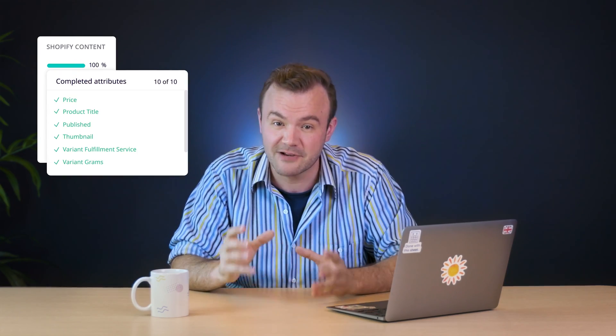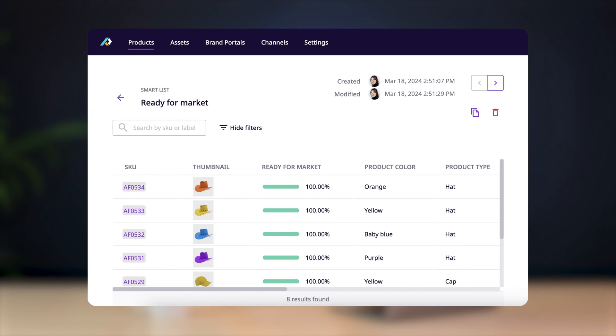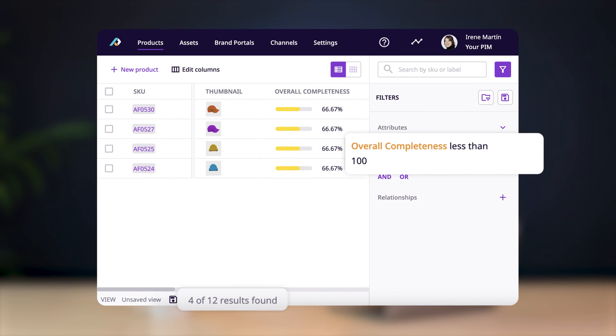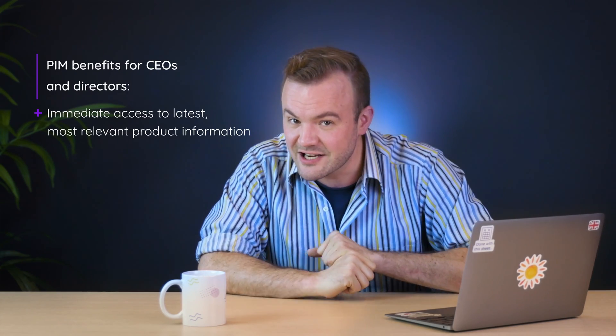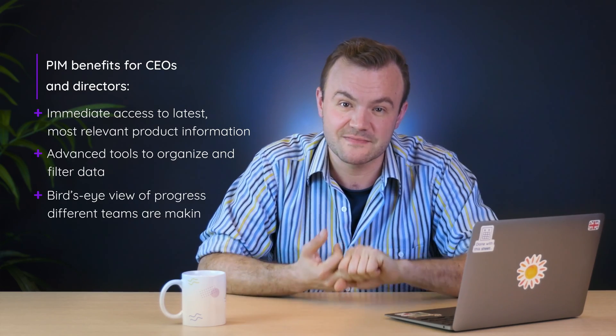You can also use PIM software to monitor different departments progress by using completeness trackers and automated workflows to quickly see how much data has been completed for particular product collections, or how many of your products are ready for market, or what percentage of your catalogue has data missing. You've got a lot of options, and it's only going to get more useful as the company grows. So the benefits for CEOs and directors would be immediate access to the latest, most relevant product information at any moment, advanced tools to help organize and filter all that data, and a bird's eye view of how much progress different teams are making.